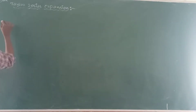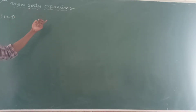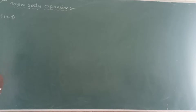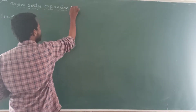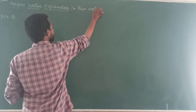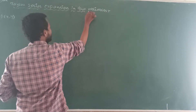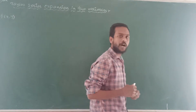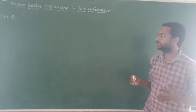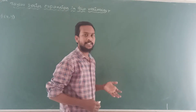We have a formula: f of x is equal to f of x comma y. This is the Taylor series expansion in two ways. So today I will explain the formula — how to remember it and how to apply it to problems of Taylor series expansion.